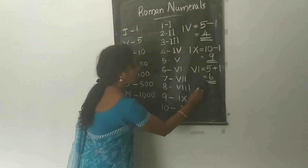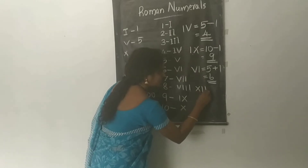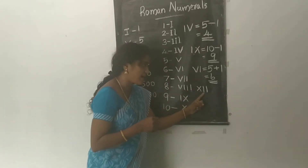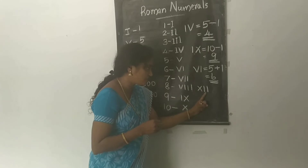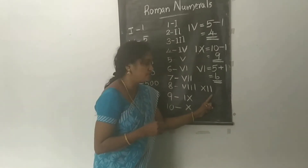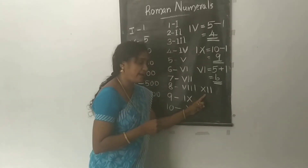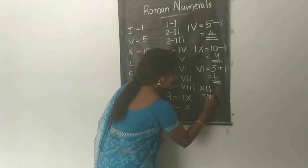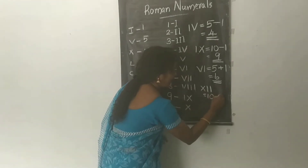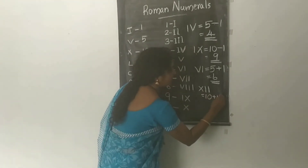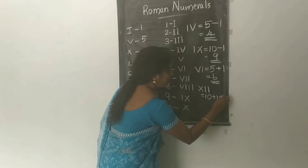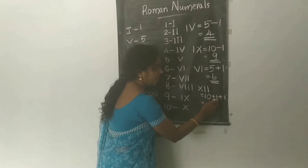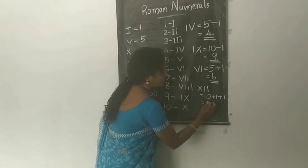Another example: XII — X stands for 10, and the two I's are smaller values on the right. So we add: 10 plus 1 plus 1 equals 12.